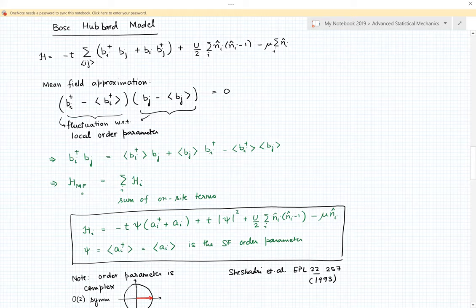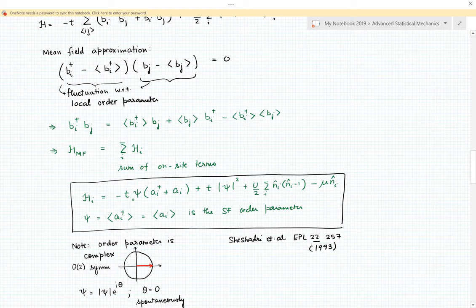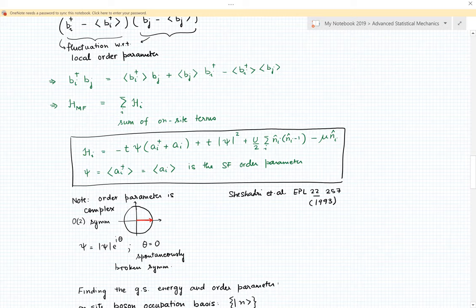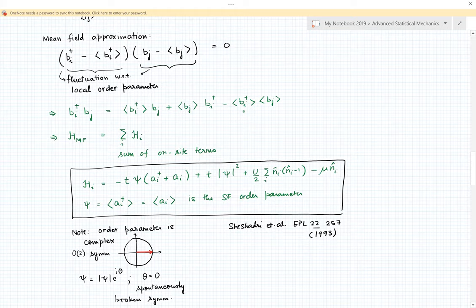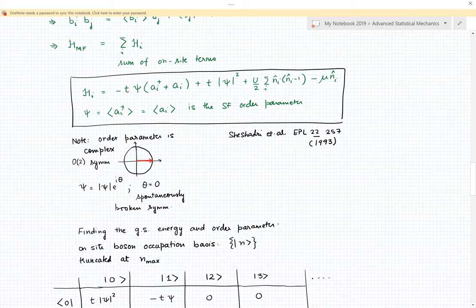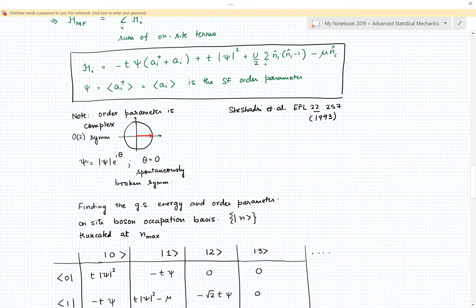With this you can see that the Hamiltonian becomes a sum of on-site terms. The on-site term has a term which is the order parameter psi multiplying b_i^† plus b_i (sorry it should have been b_i^† plus b_i, I will correct that in the notes), and there should be a coordination number which I've suppressed and absorbed in t. Then there's a second term which is t times the order parameter squared, coming from the third term in the expression for b_i^† b_j, and then the on-site terms U and mu.